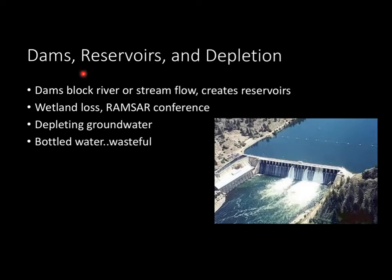Let's take a look at dams, reservoirs, and depletion. A dam — think of something like the Hoover Dam — basically blocks the flow of a stream or river, and this creates a reservoir, which is an artificial lake that stores water for human use. Dams are currently controversial because many activists are pledging to get them removed, arguing they hurt river ecosystems. A lot of people are trying to get dams removed so the original stream and river ecosystems can return to how they were.